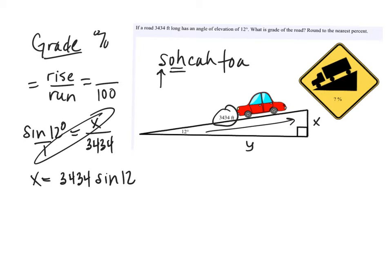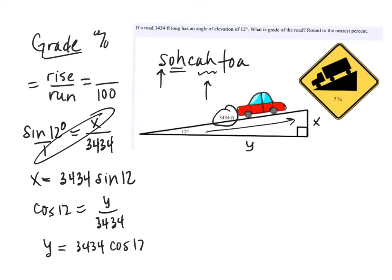Now for Y: Y is the adjacent side, and the hypotenuse is 3,434. Adjacent over hypotenuse is cosine, so the cosine of 12° equals Y over 3,434. Cross-multiplying: Y equals 3,434 times cosine of 12°.